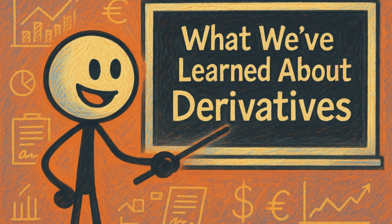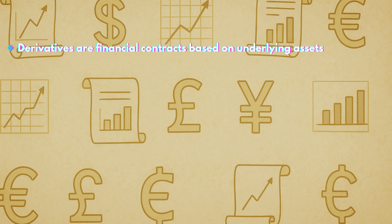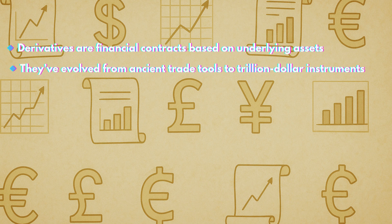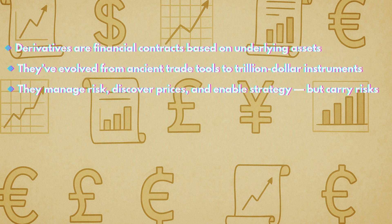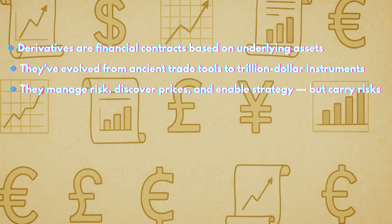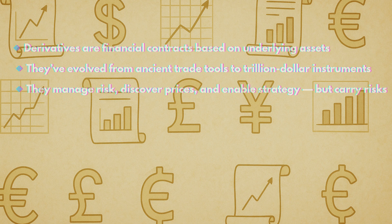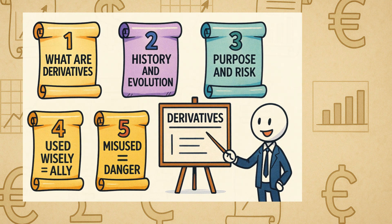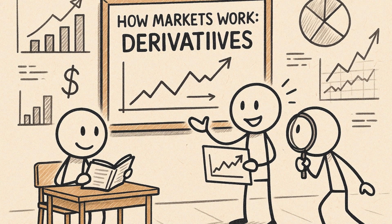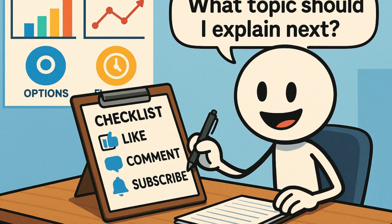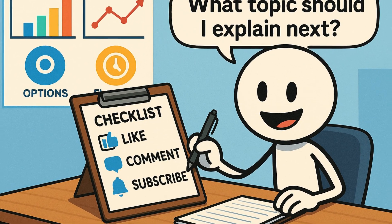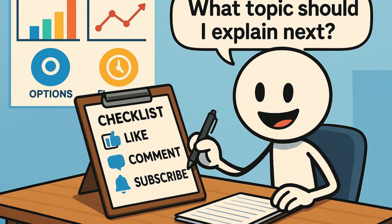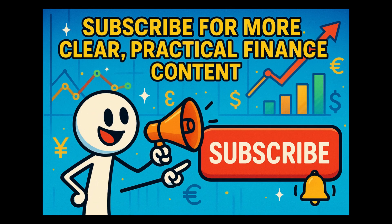To summarize: derivatives are financial contracts whose value is based on an underlying asset. They've evolved from ancient trade tools to trillion-dollar financial instruments. They help manage risk, discover prices, and enable strategy — but they also carry risk. When used wisely, they're powerful allies in finance; when misused, they can crash entire economies. Whether you're a student, investor, or just curious, derivatives are key to understanding how modern markets work. Hit the like button if this cleared up your doubts, and comment below if you want a beginner's guide to options or futures next. Don't forget to subscribe and turn on the bell icon for more clear, practical finance content.